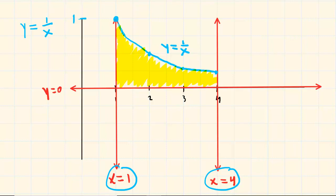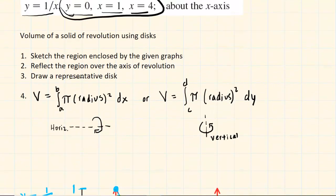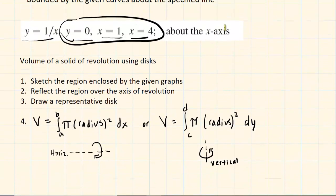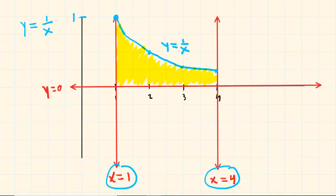Step two says to reflect this region over the axis of revolution. Our axis of revolution is the x-axis, so we're going to reflect this yellow region over the x-axis. Basically, you take each point and count down to the x-axis and then count an equal number of units below the x-axis.